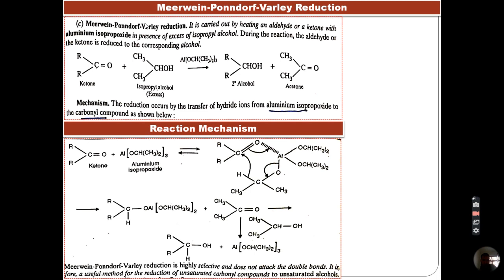Now let's see a definition. Meerwein-Ponndorf-Verley reduction is carried out by heating an aldehyde or a ketone with aluminum isopropoxide - this is basically the catalyst - in the presence of excess of isopropyl alcohol. If you remember the Oppenauer oxidation, we use a solvent, and that solvent was acetone. But in this case, we use excess of isopropyl alcohol.